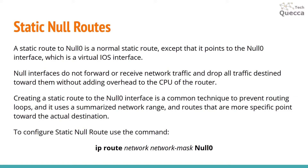To configure a static null route, use the command: IP route, then the network, then the network mask, and then the null zero interface.